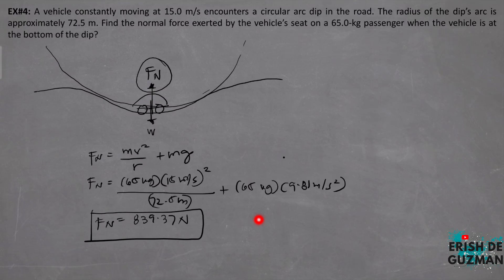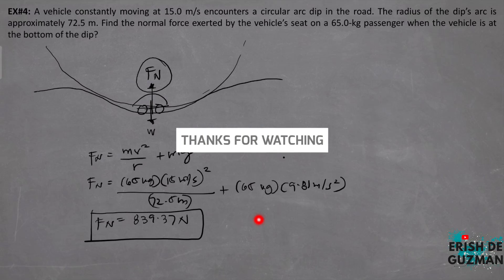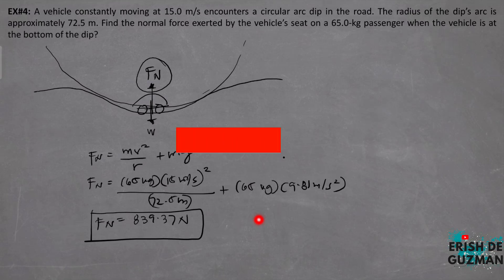The same physics applies here as in example number 3 with the plane pulling out of a dive, though in that case the magnitude of the force was much larger. This is example number 4.